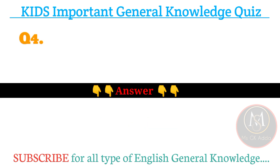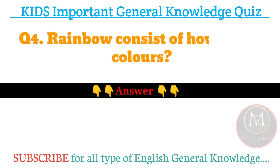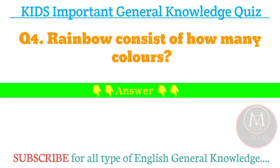Next, number four: a rainbow consists of how many colors? Answer: seven colors.